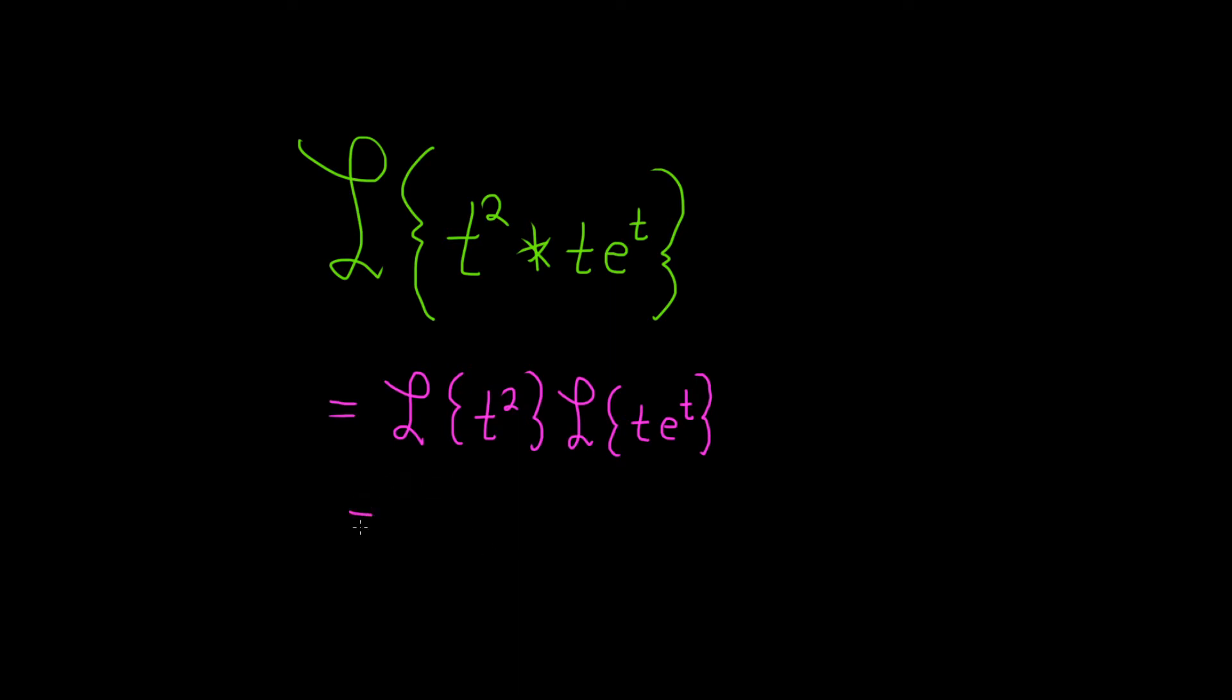So for the Laplace of t², remember the formula says you take whatever is here and that becomes a factorial. So it's 2 factorial and then on the bottom it's always 1 higher. So s³, right, you add 1.